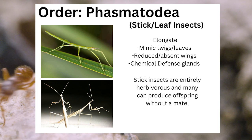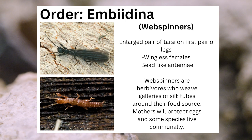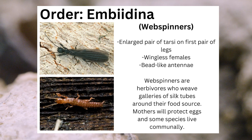The order Embiidina, commonly known as webspinners, can be identified from the large silk glands on the tarsi of their first pair of legs, their wingless females, and their bead-like antennae. Webspinners are herbivorous, and they weave galleries of silk tubes around their food source. Mothers will protect eggs, and some species even live communally.